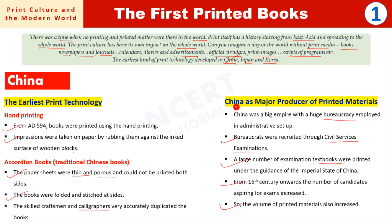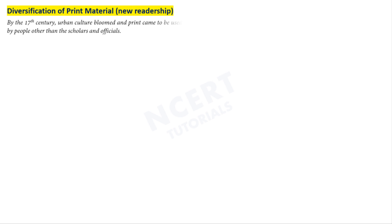That covers why China became a major producer of printed materials. The next topic is diversification of print materials. New readers developed who wanted to read different subjects, leading to a diversification of print materials across many subjects. By the 17th century, urban culture bloomed — urban lifestyle was very different — and printed books were no longer just for scholars or for official administrative purposes.